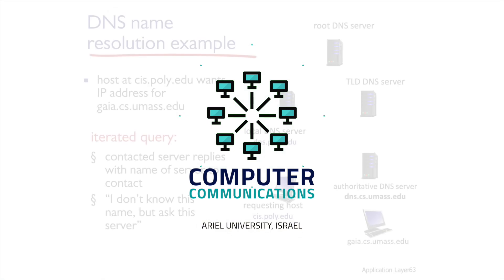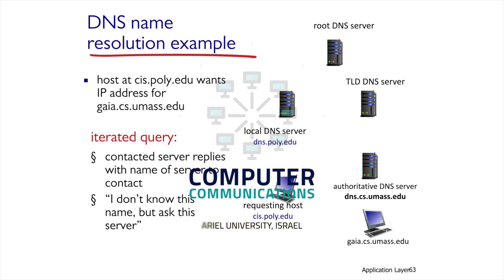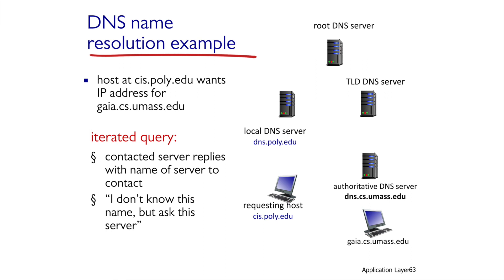In this unit, we'll learn about two methods of request and response in DNS servers. The first method is the iterative method. In this method, every server in the hierarchical tree refers the local server to a different server which gets closer to the result. We'll demonstrate the method with the following example.